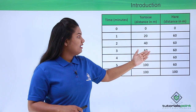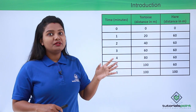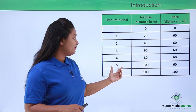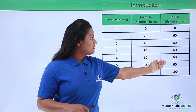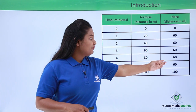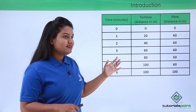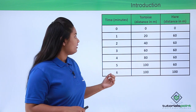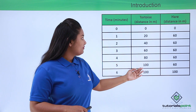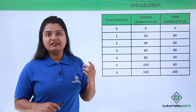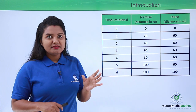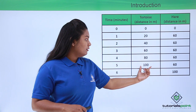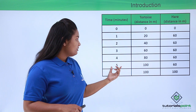This indicates the hare was taking rest under the tree and did not move at all. This continued until the end of five minutes, where the distance covered by the hare was still sixty meters, after which it increased to one hundred meters since the hare started moving again at the end of six minutes. On the tortoise's side, the distance was uniformly increasing at a rate of twenty meters every minute, and the tortoise reached the finish line at one hundred meters while completing five minutes.